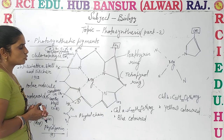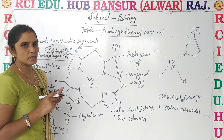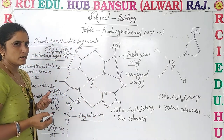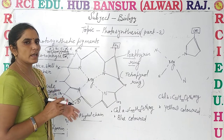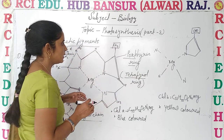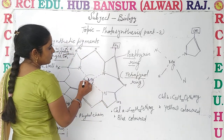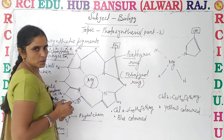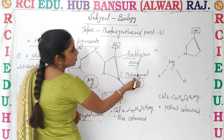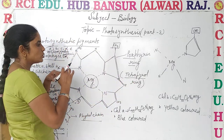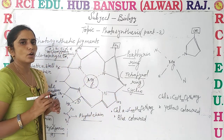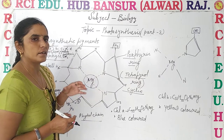Let's discuss about the structure of chlorophyll. It mainly consists of two parts: the porphyrin ring and the phytol chain. The structure consists of a tetrapyrrole ring — 'tetra' meaning four rings. At its center, magnesium is present, which is attached to nitrogen. Four pyrrole rings connect to it in a cyclic manner, and it is called the cyclic tetrapyrrole ring.